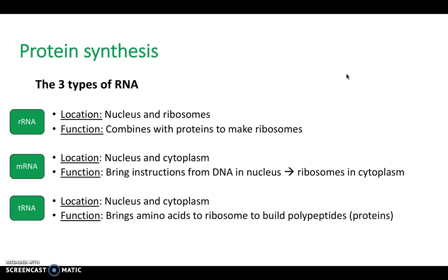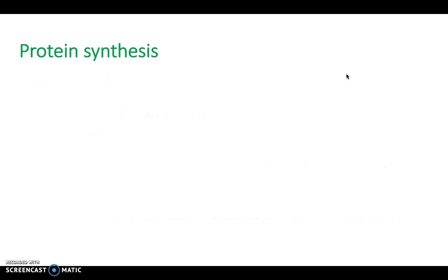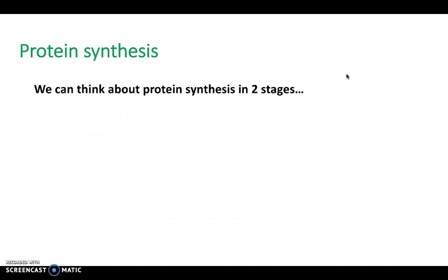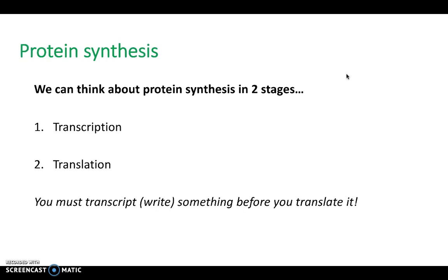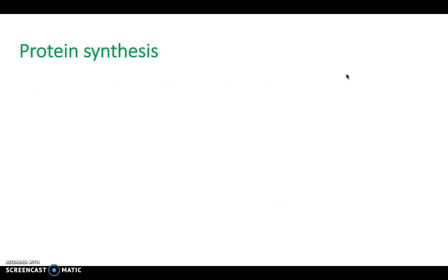This will become a lot clearer when we look at the process of protein synthesis. We can think about protein synthesis in two stages: transcription and translation. Transcription must come first before we can translate anything — just as if you're wanting to translate a language, you might want to write it down first, i.e. transcribe it, before you can translate it.